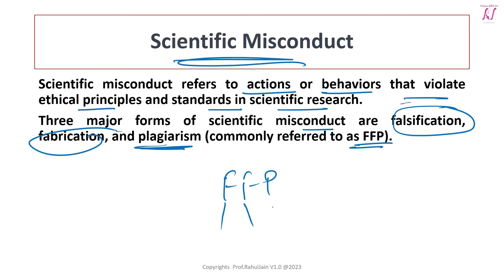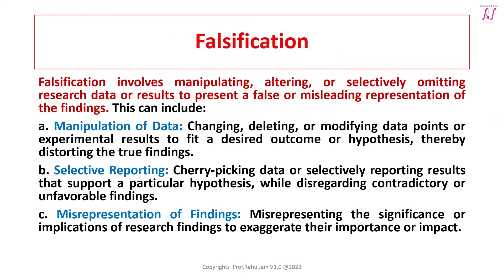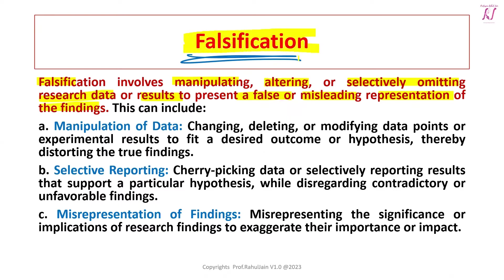Let's discuss them one by one. Starting with falsification: falsification involves manipulating, altering, or selectively omitting research data or results to present a false or misleading representation of findings. Whatever research work you have done, if you are manipulating the data for personal gain, under pressure, or altering or selectively omitting research data that may create ambiguity or bias — all of these fall under falsification.